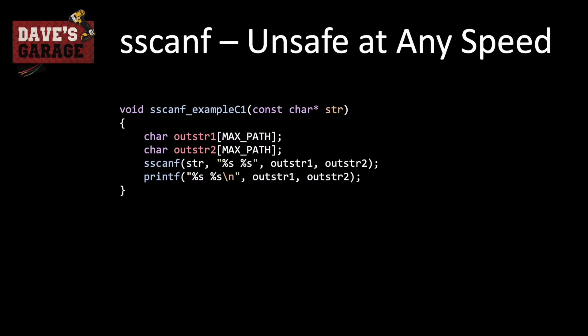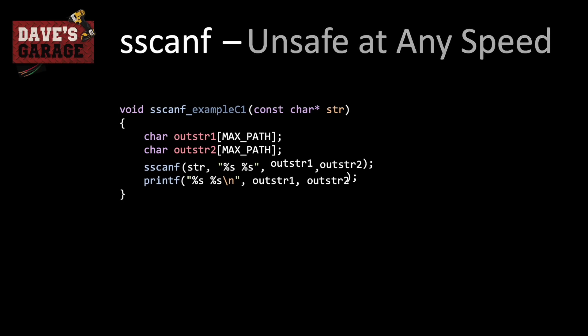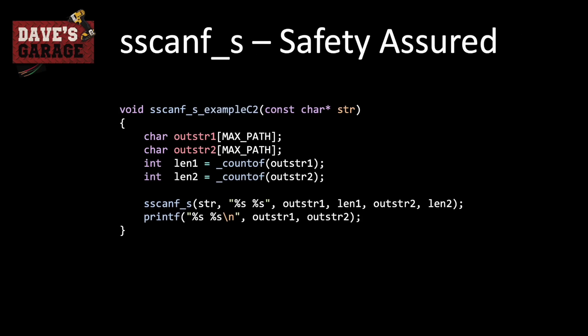Here is an unsafe example: we pass in the input string and declare two output buffers, then read two strings separated by a space into outstring1 and outstring2 and print them back out. The problem is that outstring1 and outstring2 are of unknown length. To fix that, we use scanf_s. We calculate the length of the two output buffers with the countof operator, and after the format specifier each variable is accompanied by its length. So outstring1 with len1, and outstring2 with len2. This works perfectly and will never corrupt memory.